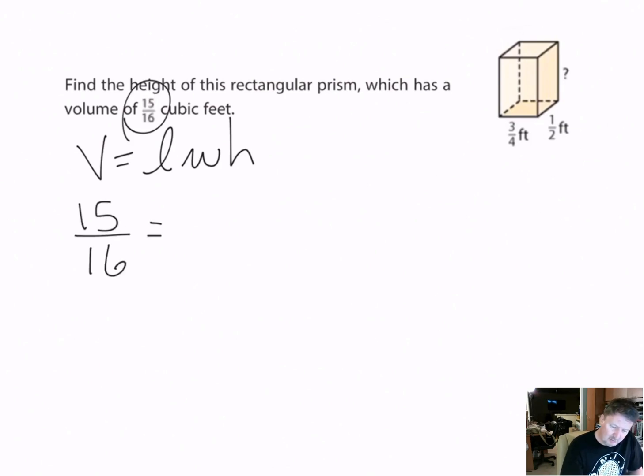I'm looking for the height, so I'm going to say the length is 3/4 and I'm going to multiply that times the width which is 1/2, and then multiply that times the height which I don't know. The first thing I want to do is multiply these two numbers together.